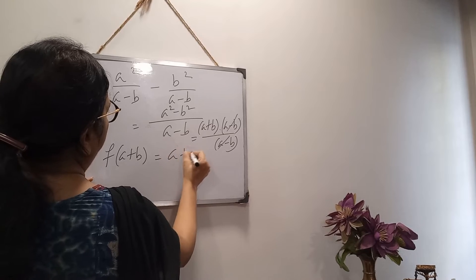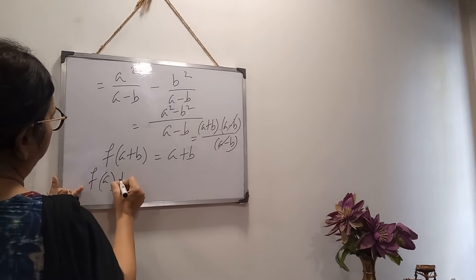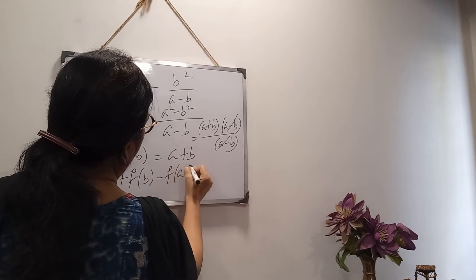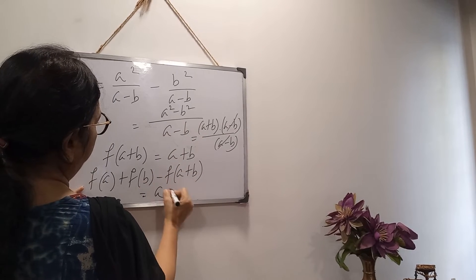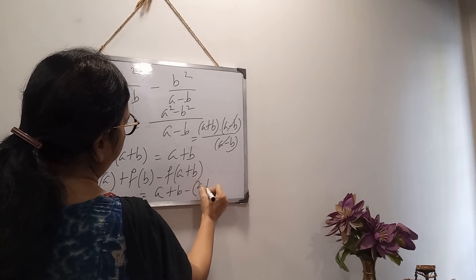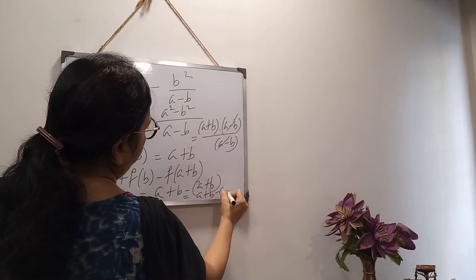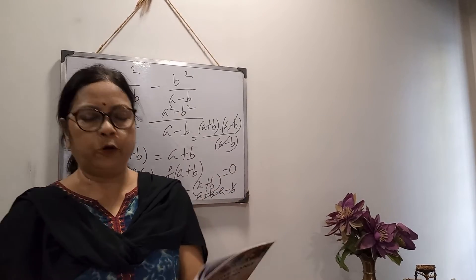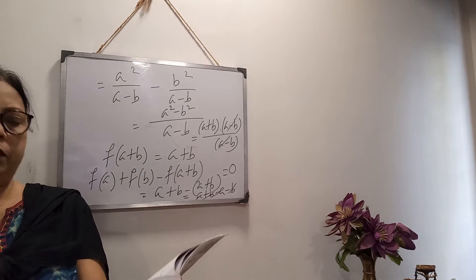So f(a+b) equals a+b. Then finally we have to find the value of f(a) + f(b) − f(a+b). f(a) means a, f(b) means b, and minus (a+b). So open the bracket: a + b − a − b. Everything is cancelled out. Answer is 0. Very easy this one.